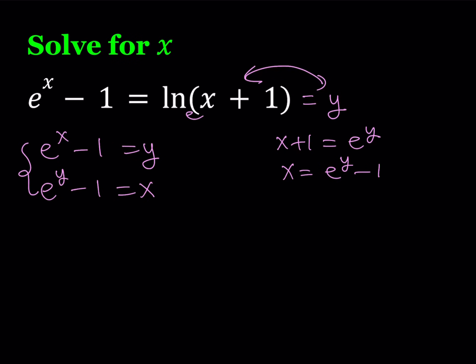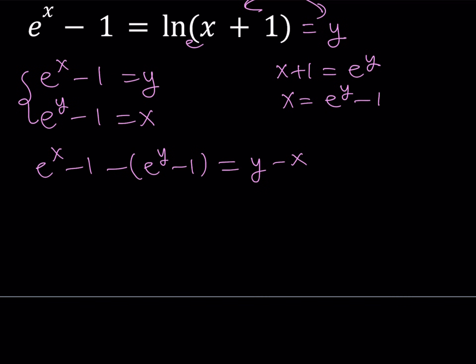So now I'm going to subtract both equations. So e to the power x minus 1 minus e to the power y minus 1 equals y minus x. The negative ones cancel out.